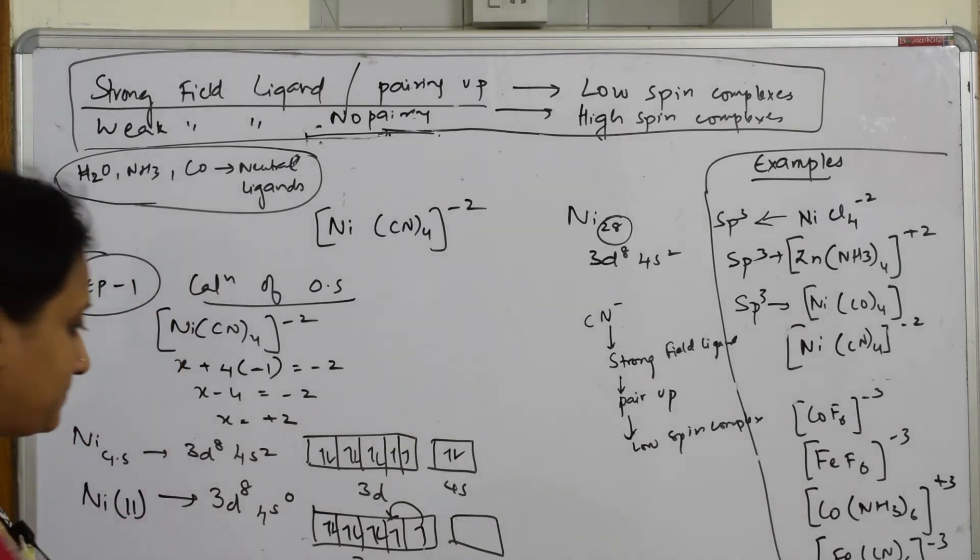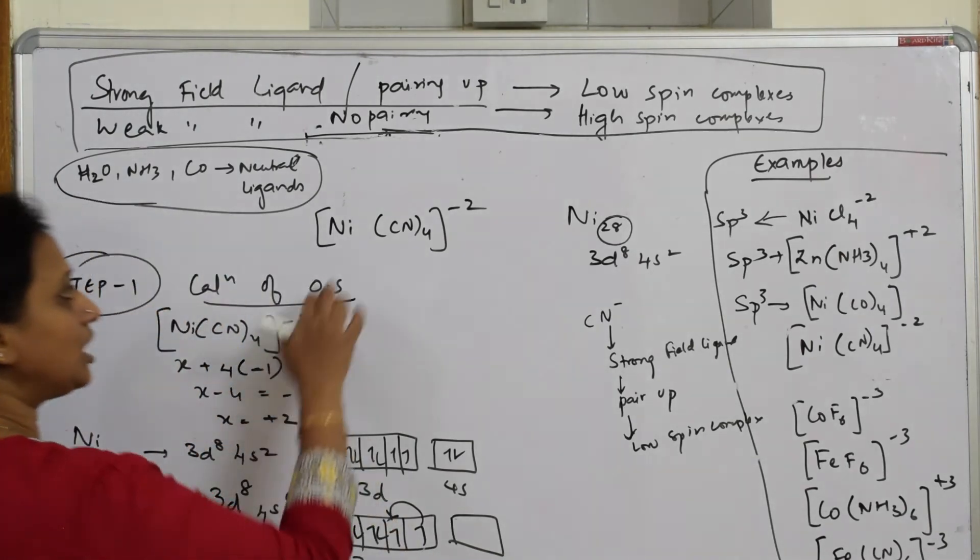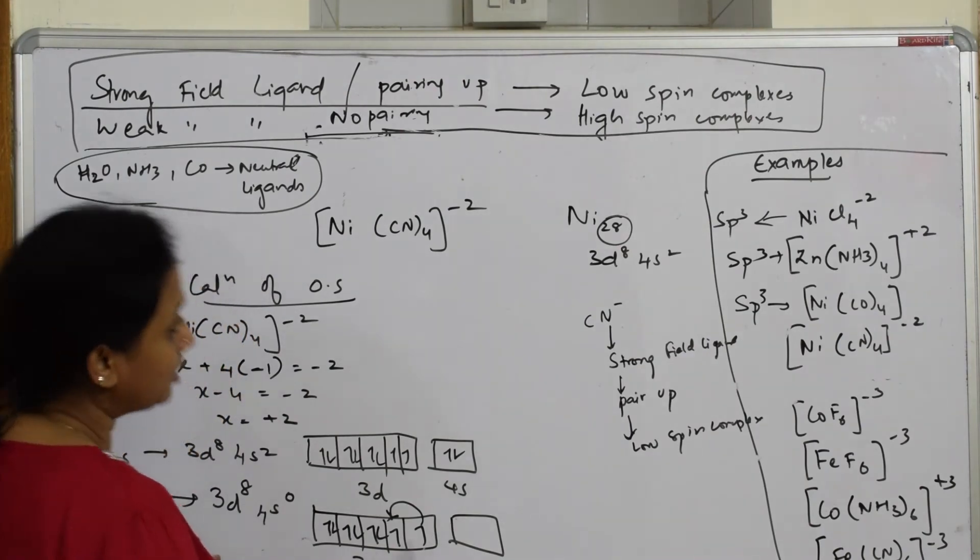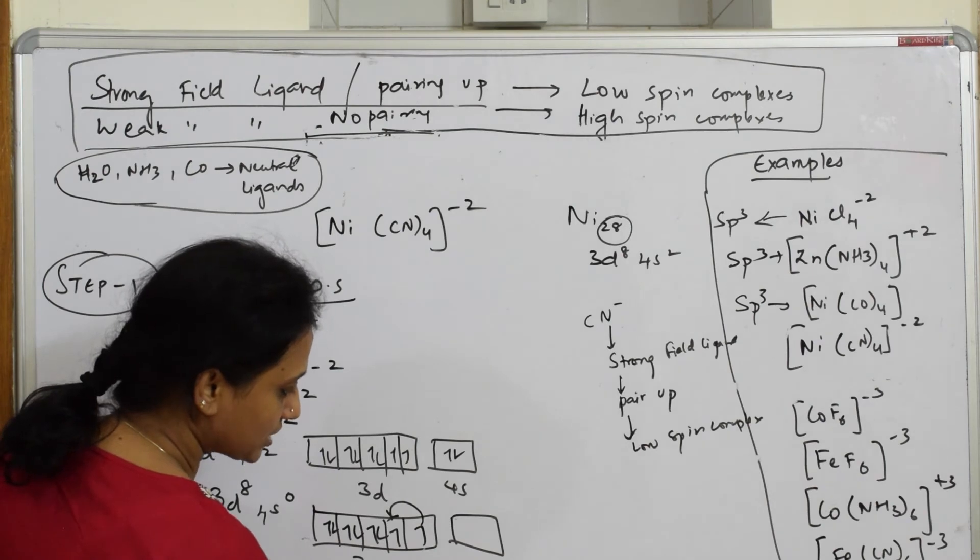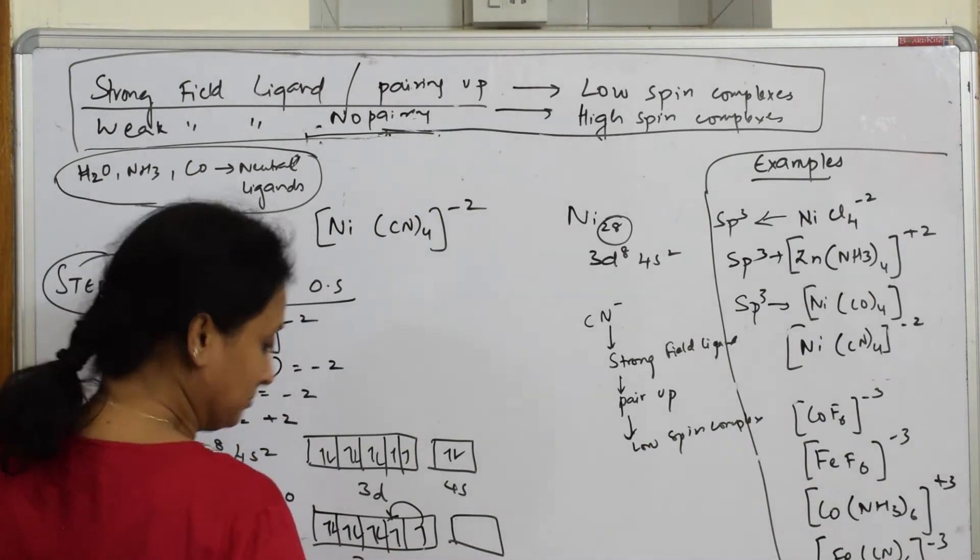Now this electron from here has gone and you have a vacant d orbital available. Now you are left with s. How many do you need? How many CNs? One CN will come and bond. How many are still there? Next is this is 3d, this is 4s. Two are over, I still need two more.